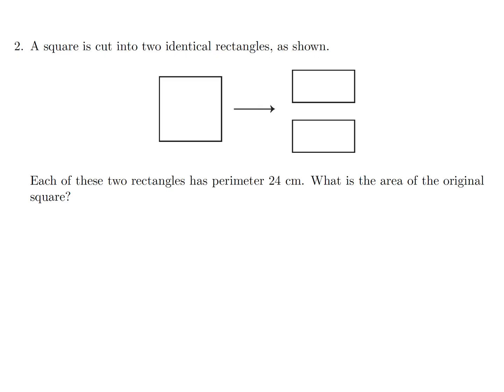A square is cut into two identical rectangles. Each of these two rectangles has a perimeter of 24. What is the area of the original square? Let's label this: I'll call that X, and since it's been cut into two identical pieces, this side is going to be X over 2. They're saying each of the two rectangles has a perimeter of 24.